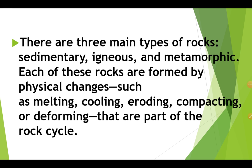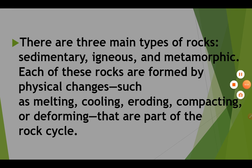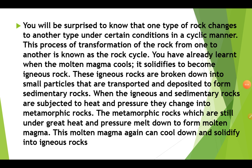There are three main types of rock: sedimentary, igneous, and metamorphic. Each of these rocks is formed by a physical change, such as melting, cooling, eroding, compacting, or deforming, that are part of the rock cycle. You will be surprised to know that one type of rock changes to another type under certain conditions in a cyclic manner.